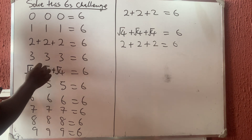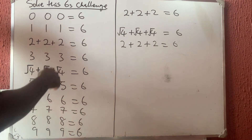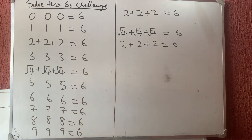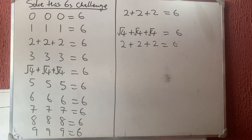So for four, four, four I have: root four plus root four plus root four. If you have any other solution, let us know in the comment section.